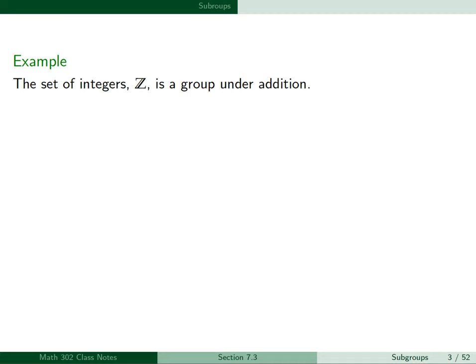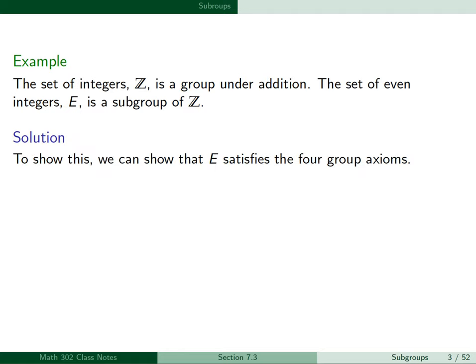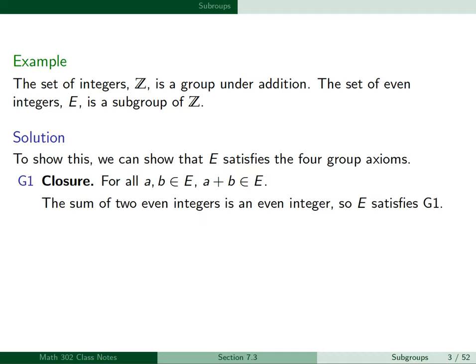For our first example, the set of integers Z is a group under ordinary integer addition, and we want to show that the set of even integers E is a subgroup of Z. To show this, we can show that E satisfies the four group axioms. First, G1 is closure: for all A, B in E, A plus B is in E. The sum of two even integers is an even integer, so E satisfies axiom G1.